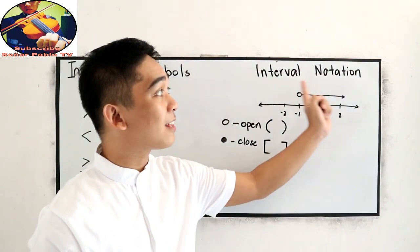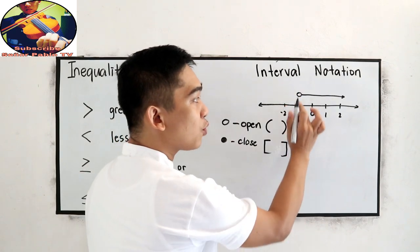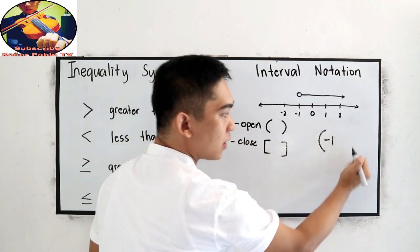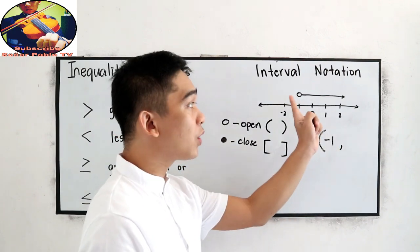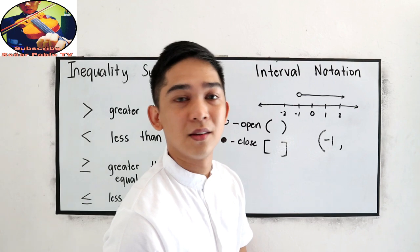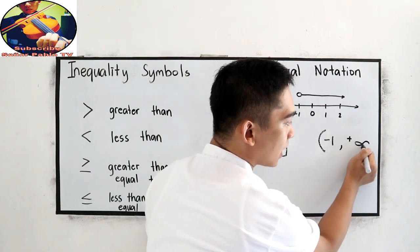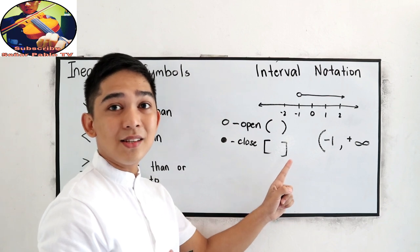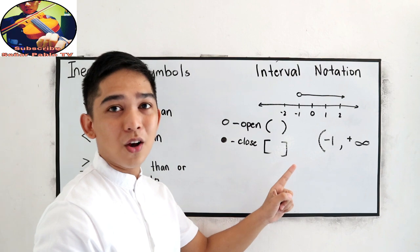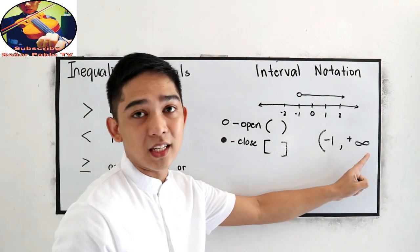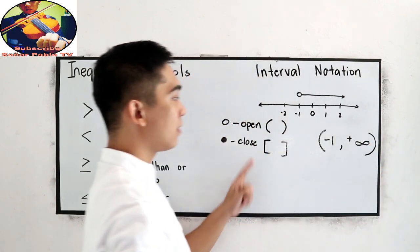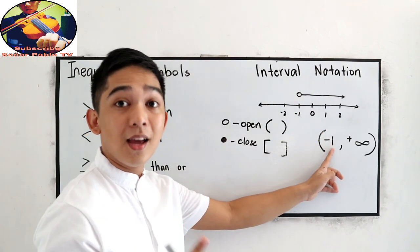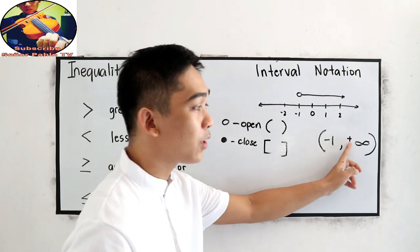Now, let us write this in interval notation. Open to negative 1 — write the number negative 1, then a comma, then going to positive infinity. Since we do not know where it ends because this is infinity, we're going to use the open symbol. So: open parenthesis, negative 1, comma, positive infinity, close parenthesis — meaning negative 1 is not included.